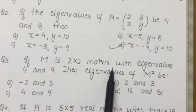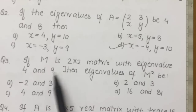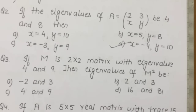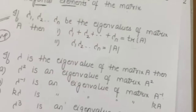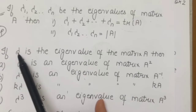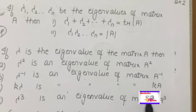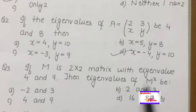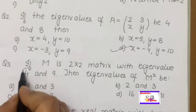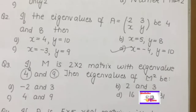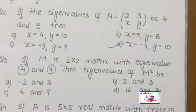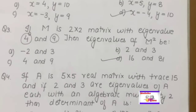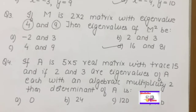Question: If M is a 2×2 matrix with eigenvalues 4 and 9, what are the eigenvalues of M²? Using the property that if λ is an eigenvalue of A then λ² is an eigenvalue of A², we simply compute 4² = 16 and 9² = 81. So the eigenvalues of M² are 16 and 81.